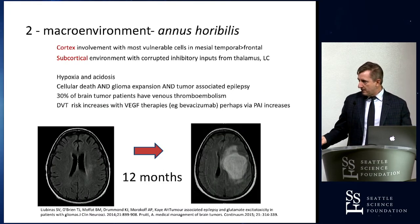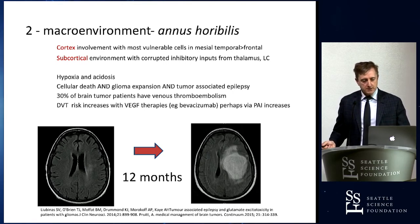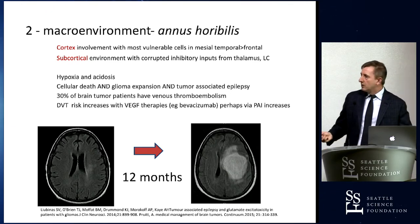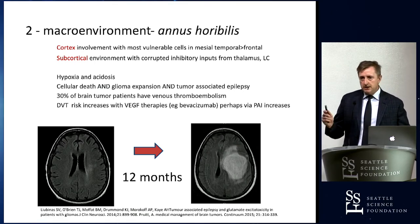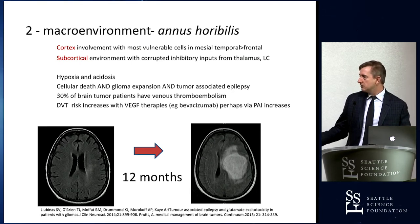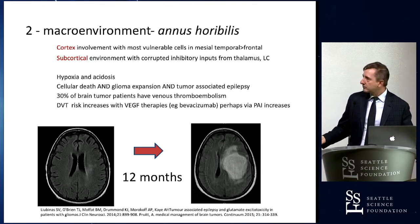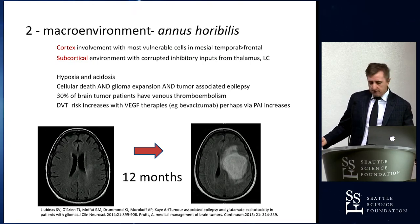That perirolandic white matter change — over the course of 12 months — expands massively from glioblastoma. Normally it's the cortex, the gray matter, that triggers seizures. But with a tumor like this, the inhibitory controls from locations like the thalamus and locus coeruleus are undercut or eroded, such that seizure activity beginning on the cortex can't be given a signal to slow or calm. Within that scenario, there's hypoxia, acidosis, thromboembolic effects, and DVT risks.